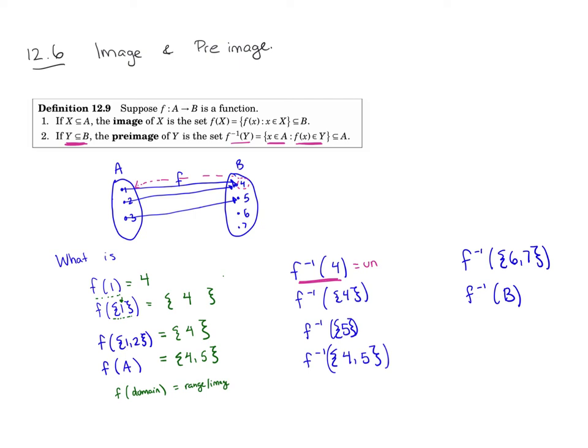So if I just asked you for f inverse of 4, this is going to be undefined because I have no inverse function since f is not one-to-one or onto. So no inverse since f is not bijective.